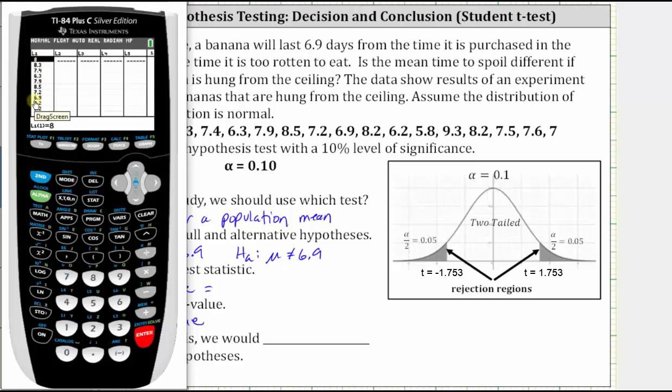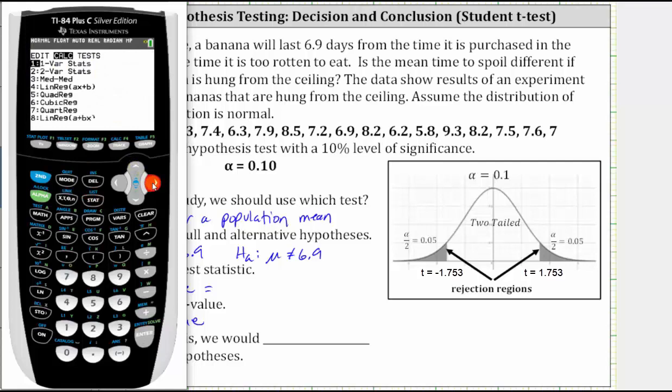And now to perform the t-test, press stat, right arrow to tests, select option two for t-test. The input is the data list, so we need to make sure that data is selected. Down, population mean is 6.9. Down, the data is in L1, which is correct. We are not using a frequency table, and therefore the frequency is one, down.